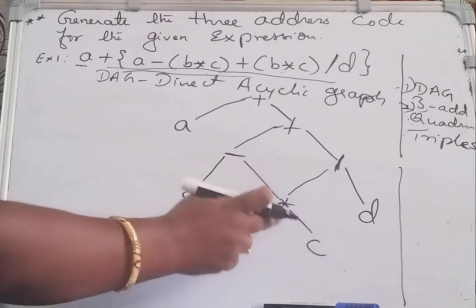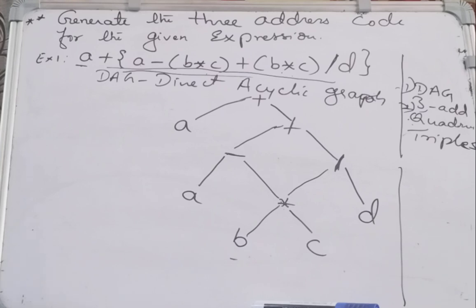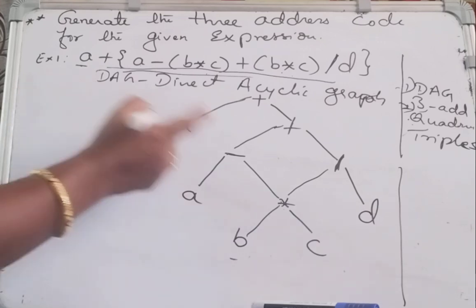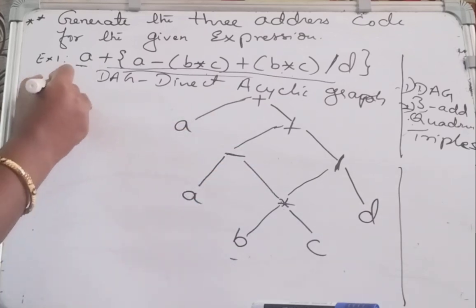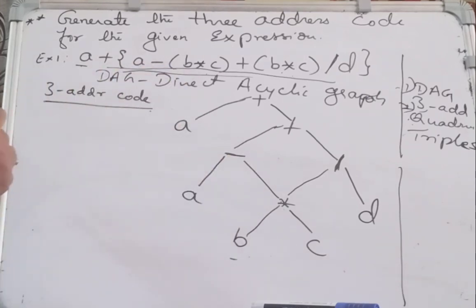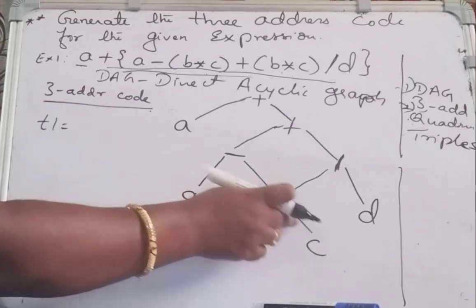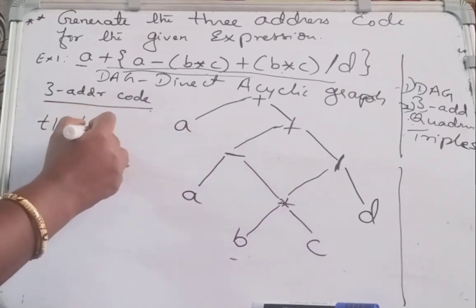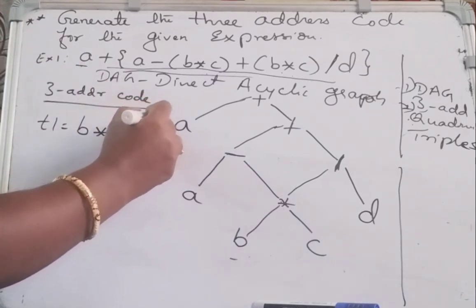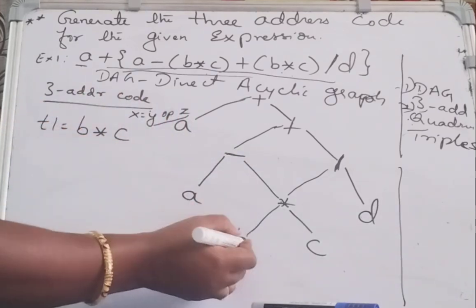Now B star C — I am going to put this in one temporary register using the first method of three address code instruction, which is X = Y op Z. So I am writing: T1 = B star C. This is of the form X = Y op Z — that is the first rule I am applying. T1 = B star C.